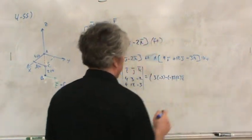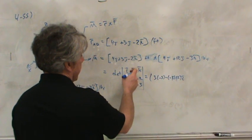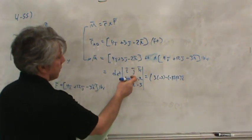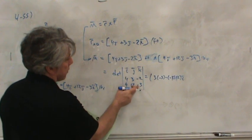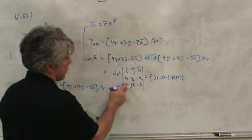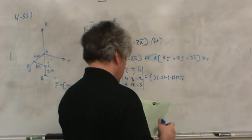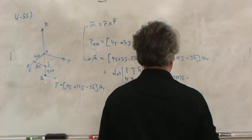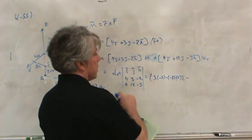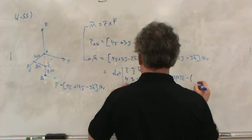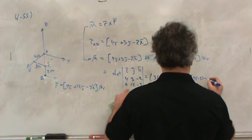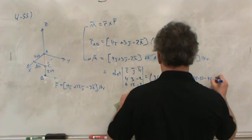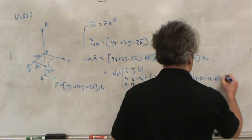Now, I usually run out of room, but I think I've got enough space this time. So, let me continue with the j component. So, cross off the column and row for j. You'll have 4 times negative 3 minus negative 2 times 4. Or, minus 4 times negative 2. But don't forget, you have to attach a negative sign for this center term. So, let's see. 4 times negative 3 minus 4 times negative 2. And that's the j component.